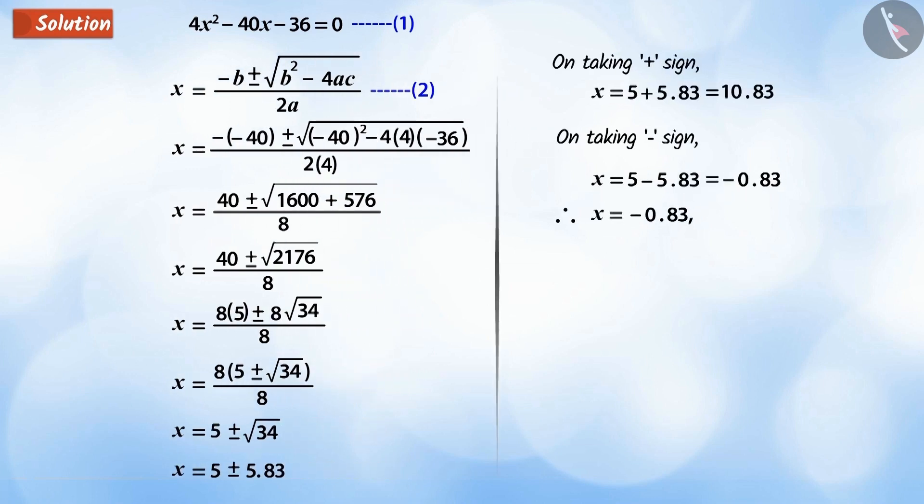That is, x equals minus 0.83 or x equals 10.83. Because x is the speed of current, it cannot be negative. Hence, we leave the value x equals minus 0.83. So we get that the speed of the ship is 10.83 km per hour.